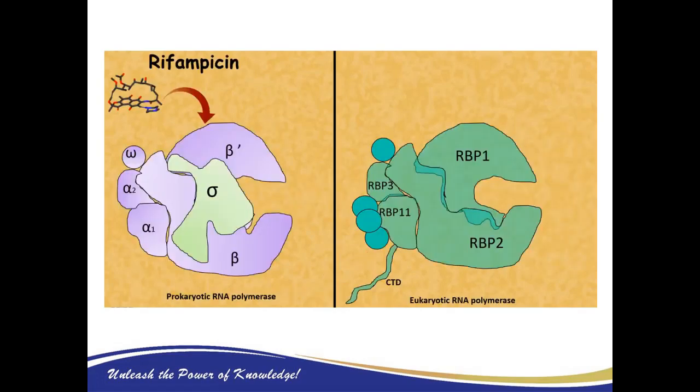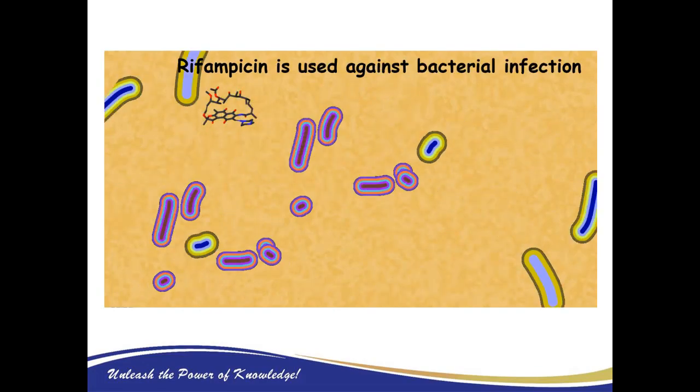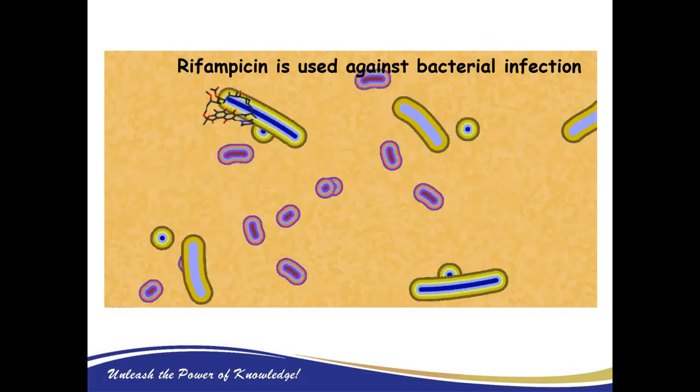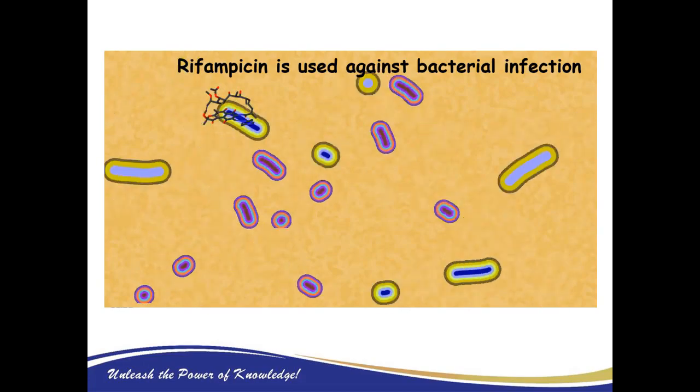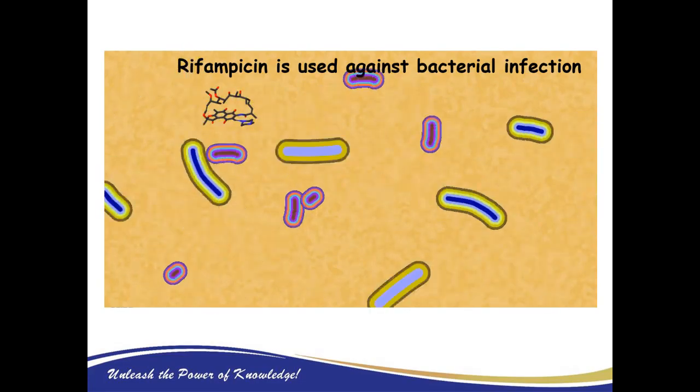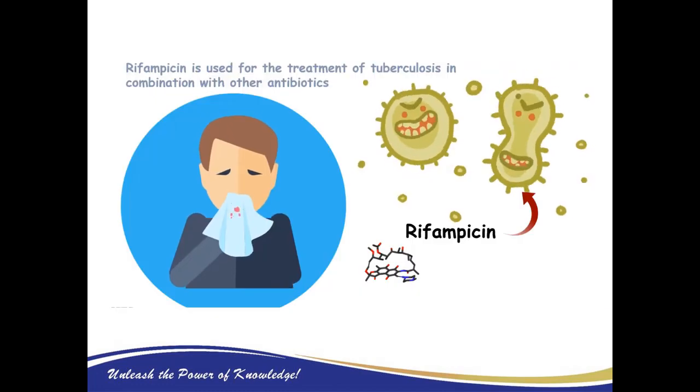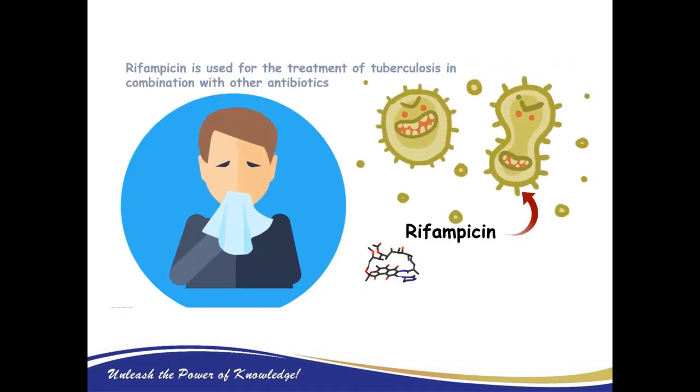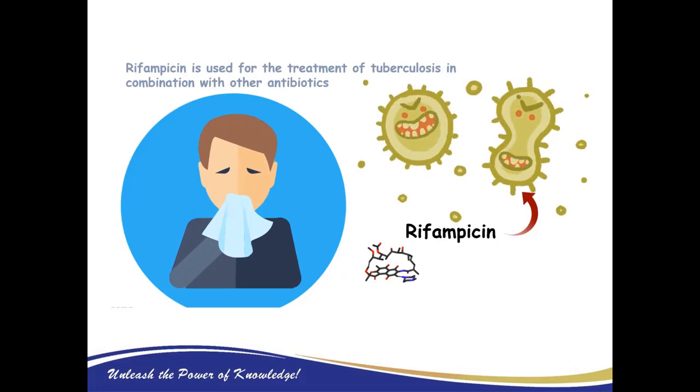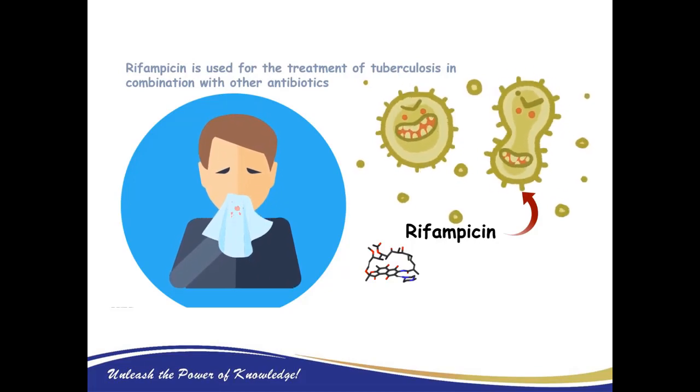Rifampicin does not affect eukaryotic RNA polymerase. It turns out eukaryotic RNA polymerase has very low binding affinity with rifampicin, and that's why it is resistant. Since rifampicin can selectively interfere with bacterial RNA polymerase, it is used as an antibacterial agent, especially for tuberculosis. Rifampicin is used as a drug in combination with many other drugs.